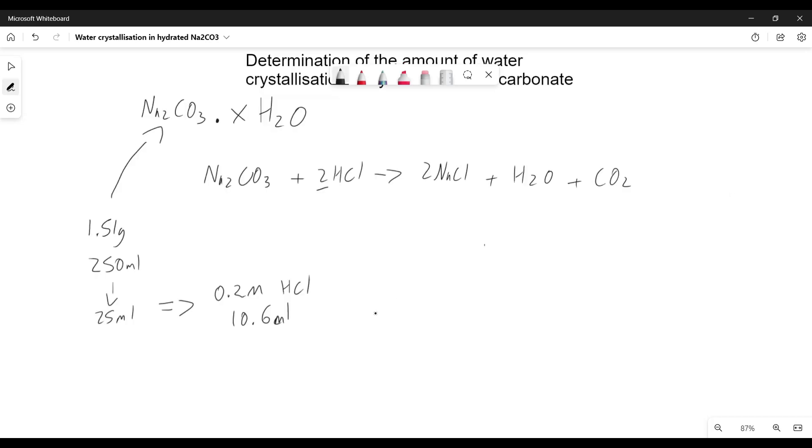What can we do with this information? Well, we know that saying we have 0.2 molar HCl is the same as saying we have 0.2 moles per 1,000 mils. So if we divide this by 1,000 to get per 1 mil and times by 10.6 to get per 10.6 mils.